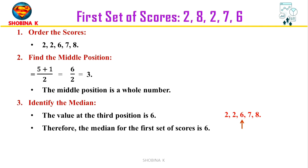To find the middle position, add 1 to the total number of scores and divide by 2. Here we have 5 scores, so (5 + 1) ÷ 2 = 6 ÷ 2 = 3. The middle position is the whole number 3.